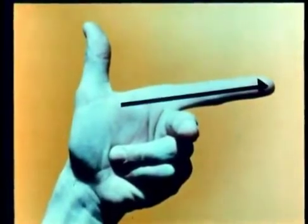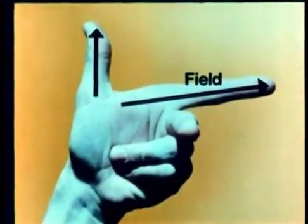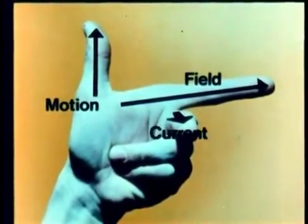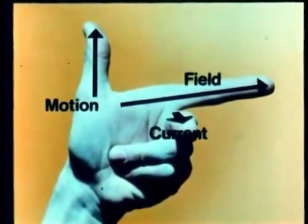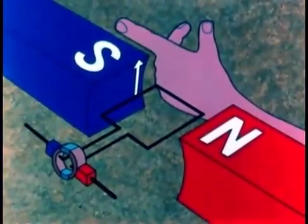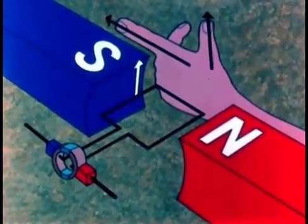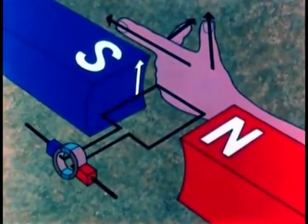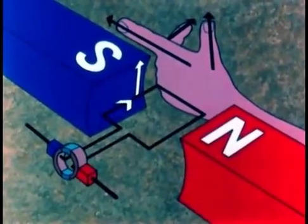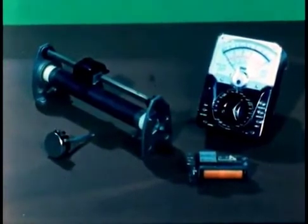As before, the first finger points in the direction of the field. The thumb points in the direction of the motion. And the second finger will point in the direction of the current. Try it in this case, where the far side of the loop is moving upwards: first finger field, thumb motion, second finger direction of current — this way. And that's the end of our look at motors and generators. In the next part, we will look at some miscellaneous electrical equipment.